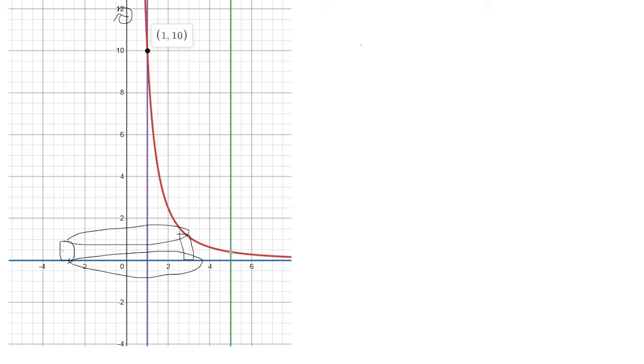So the formula is 2π integral of the radius times the height. And then we'll say, in this case it's going to be dx.